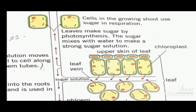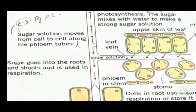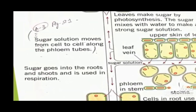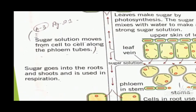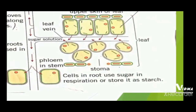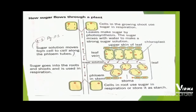The sugar solution moves from cell to cell along the phloem tube. Sugar goes into the root and shoot and is used in respiration. Finally, cells in the root use sugar in respiration or store it as starch.